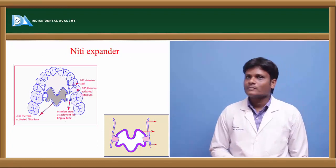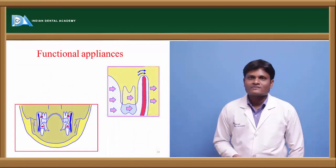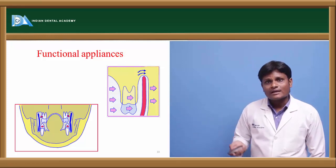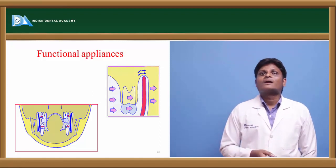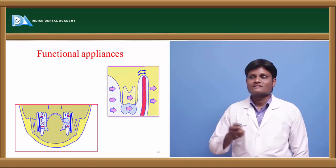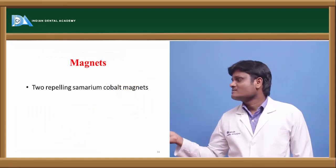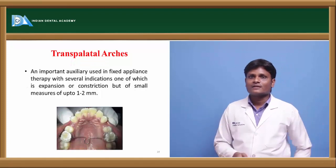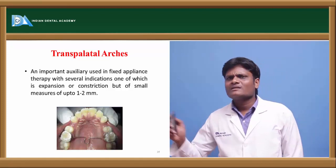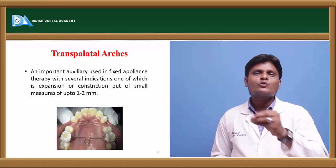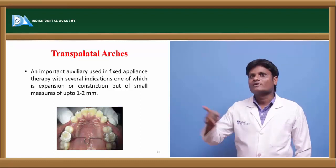The NITE expander is a nickel-titanium expander used to expand the maxillary arch. Functional appliances keep the dental arches away from the buccal musculature so tongue force pushes the arches outward, allowing normal transverse development. Two repelling samarium cobalt magnets placed in a split acrylic plate on either half cause expansion by repelling forces. The transpalatal arch achieves only very minimal expansion — 1 to 2 mm — particularly in the region of the first permanent molar, useful for single-tooth crossbites of the molar.